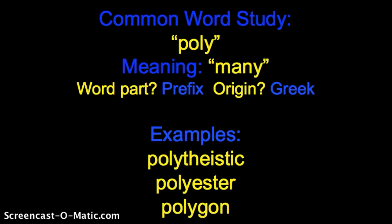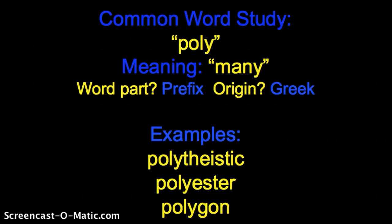The third word is polygon. This is a math word — you've probably heard this in math. A polygon is a many-sided figure. There are lots of different polygons, starting with a triangle, working all the way up to an octagon and a decagon. So anytime a shape has more than two sides, it becomes a polygon, which is a many-sided shape.